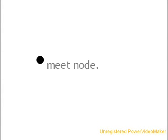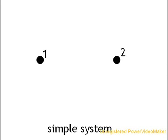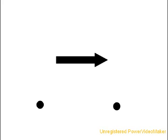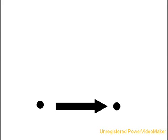Meet node. This node represents an individual. With just two nodes, we can represent a simple system. In any system, there are two basic ways nodes can interact with each other.